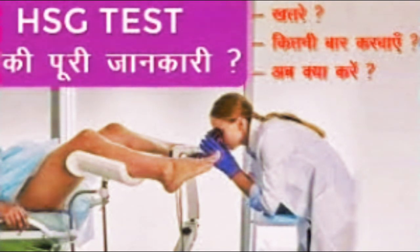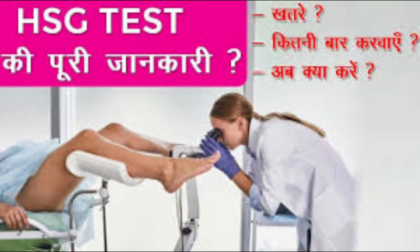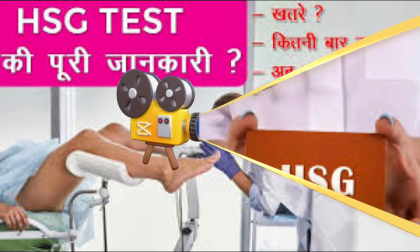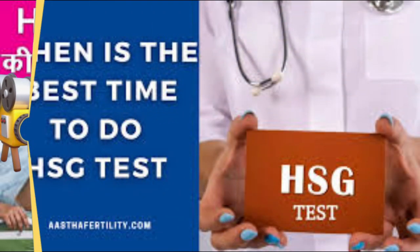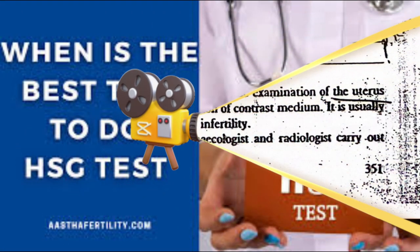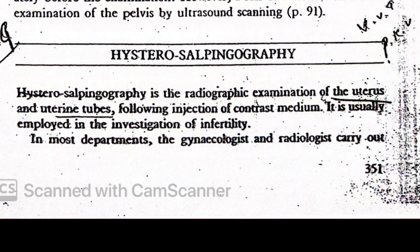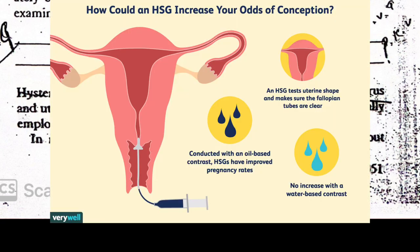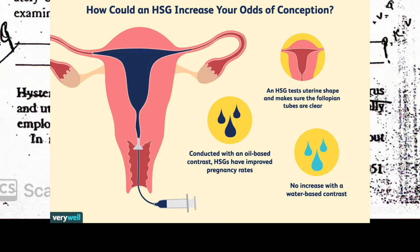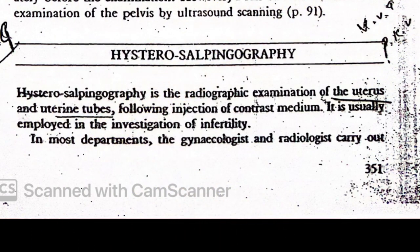Welcome to the channel. Today we are going to study about hysterosalpingography — the radiographic examination of the uterus and uterine tubes following injection of contrast medium. It is usually employed in the investigation of infertility.